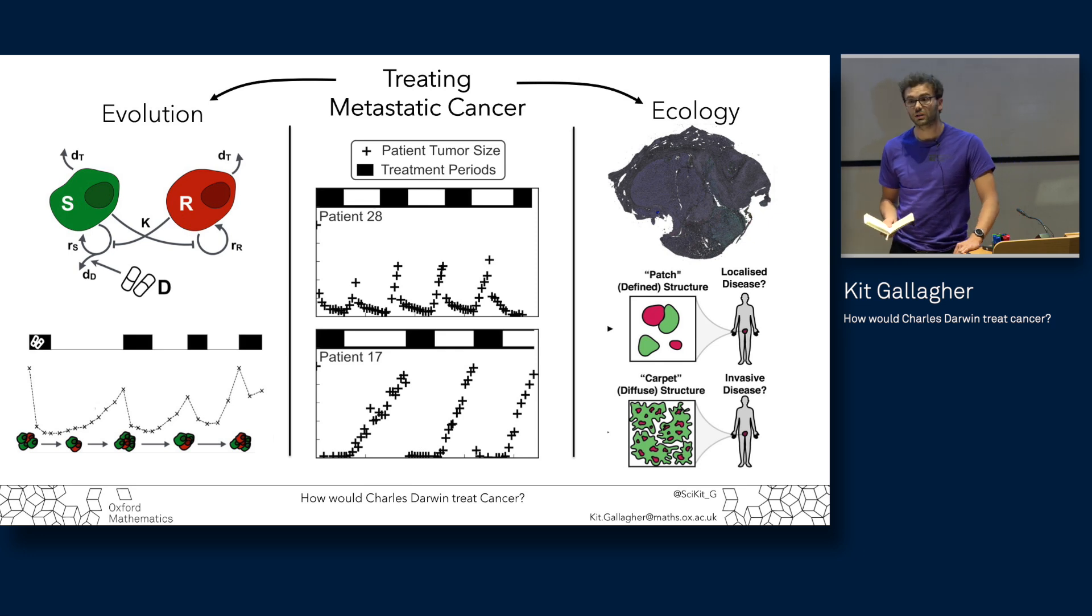But where does math come into this? We can use ordinary differential equation models fitted to clinical data and optimal control theory to tailor those breaks in our treatment to individual patients and optimize the treatment schedule for them. We can also consider the ecology of the tumor as well. Tumors are spatially heterogeneous, and by considering how those drug-sensitive and drug-resistant cells are organized within the tumor, we find that we can characterize different diseases and improve outcomes for patients. We can do this using agent-based models and spatial statistics. We're now working to try and translate these approaches to the clinic to replicate the success of the Washington farmers over 100 years later in cancer patients.